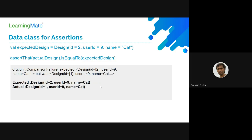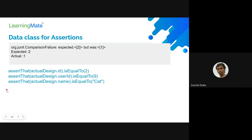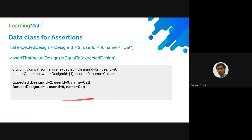With a data class, either we can set up the properties - here is the design with design id, user id, name, etc. - and then do the assertion of actual result with the expected result. If there are any differences, it can be easily understood from the error message: it will print both objects and say the comparison failed. For example, expected id is 1 but actual is 2. This gives a very descriptive error message. Instead of writing 15 assertions for 15 properties, we can simply equate object to object and find the differences from the error messages.